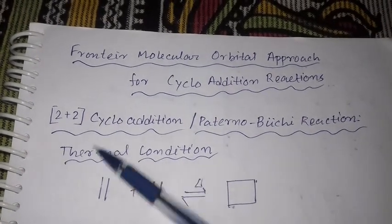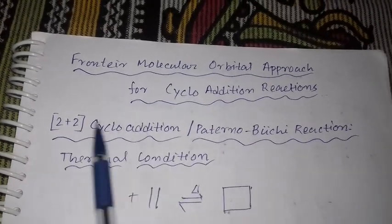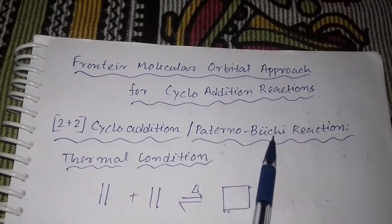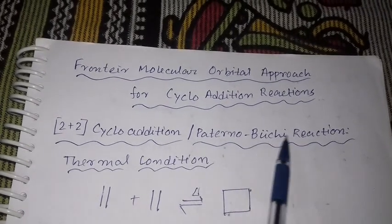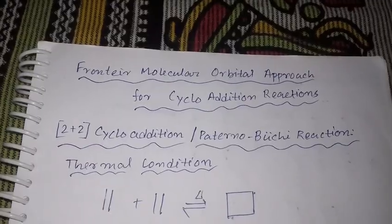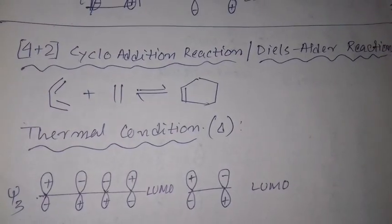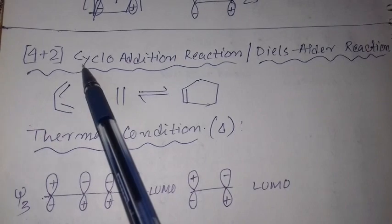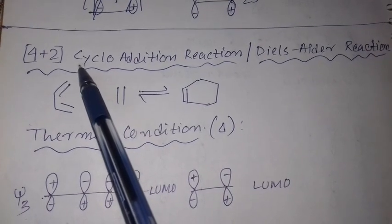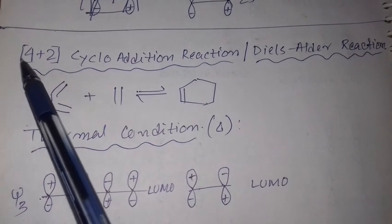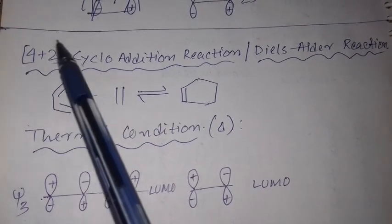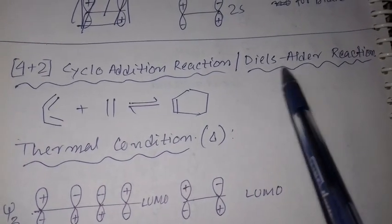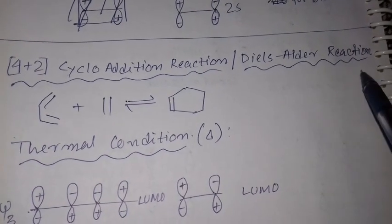There are two types of cycloaddition reactions. One is the 2+2 cycloaddition, known as the Paterno-Büchi reaction. The other is the 4+2 cycloaddition reaction, where a diene and an alkene react with each other — known as the Diels-Alder reaction.